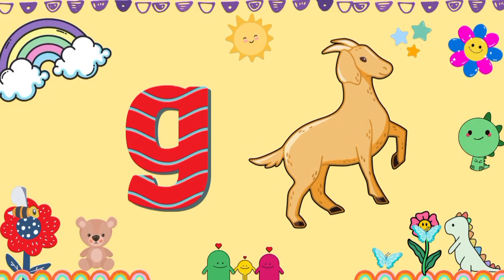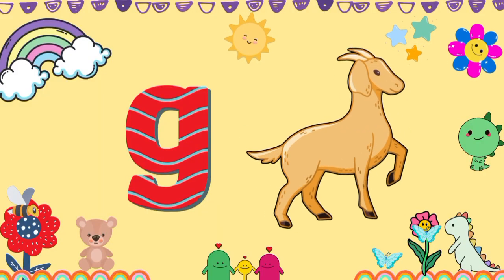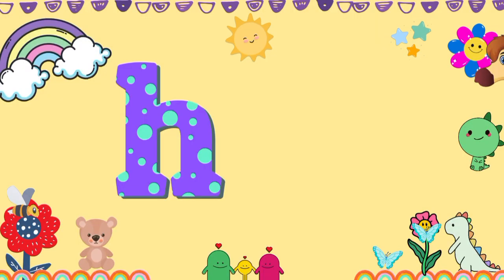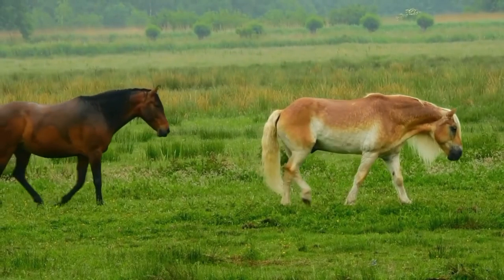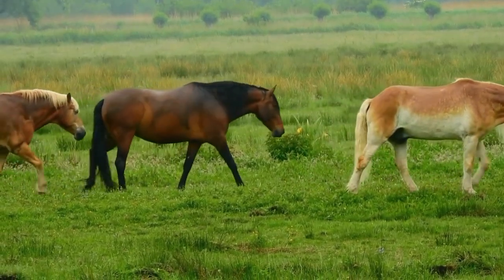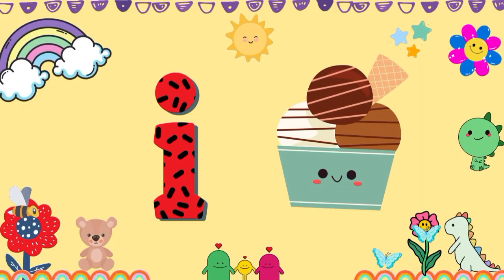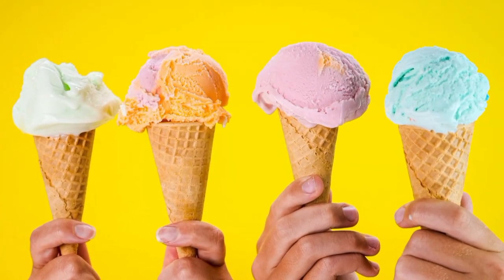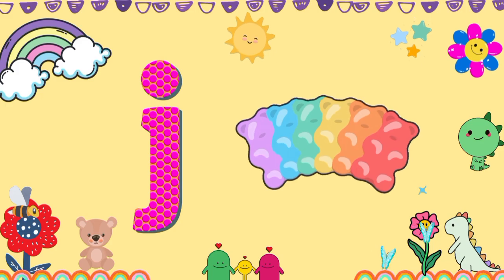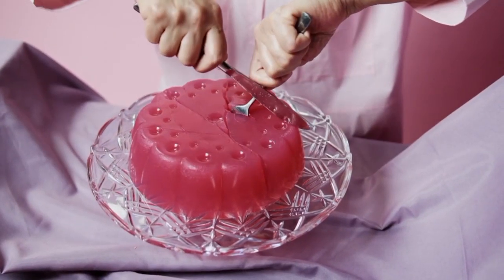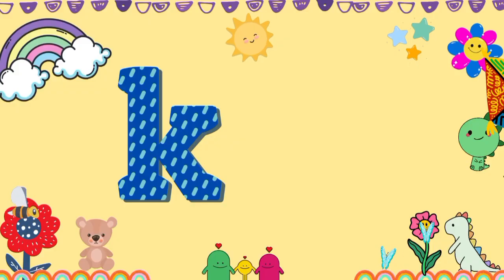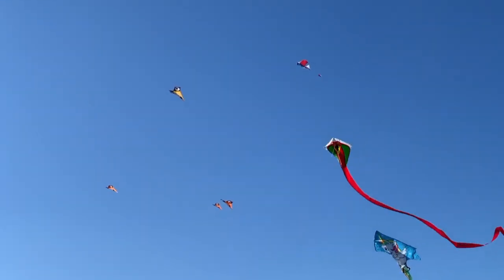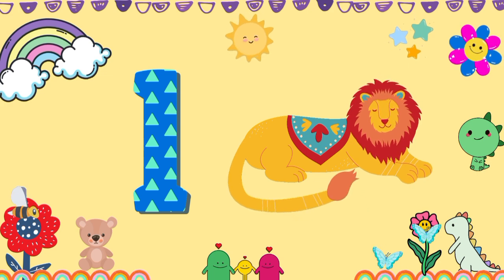G for Gold, H for Horse, I for Ice Cream, J for Jelly, K for Kite, L for Lion.